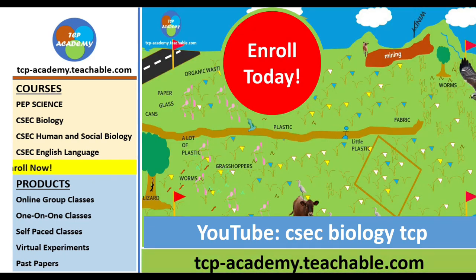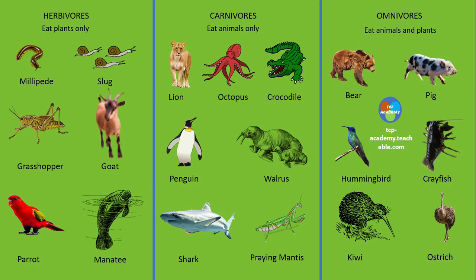Carnivores refer to animals that eat meat only, or other animals only. Examples would be lion, octopus, crocodile, penguin, walrus, shark, and praying mantis.